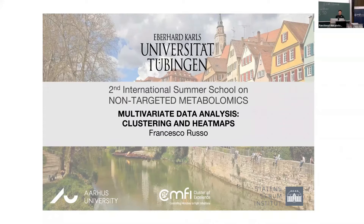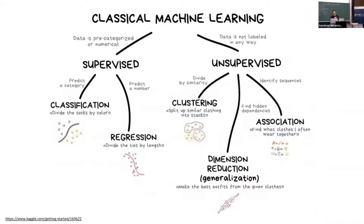I would like to introduce some concepts related to clustering and heatmaps. I know that for many of you this would be trivial, and for others it would be new — it's a heterogeneous audience. During this summer school you probably heard a lot of terms, many of them under the umbrella of machine learning. We can divide machine learning into two sides: one supervised branch and one unsupervised branch. The supervised branch basically uses labels to classify — for example, socks by color — or to predict a number, like the length of a tie.